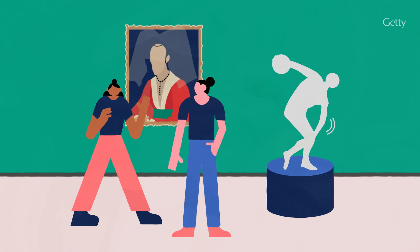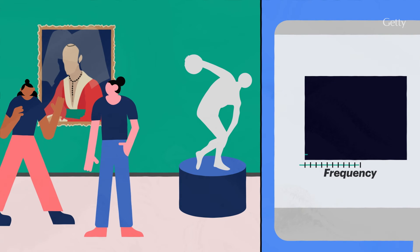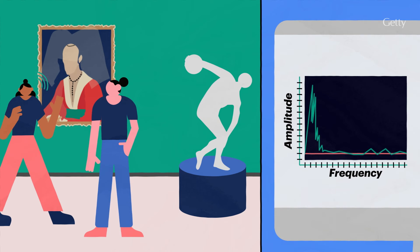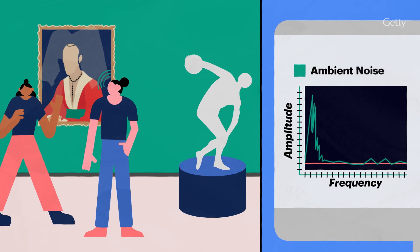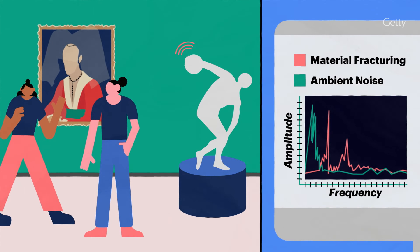So how can we tell the difference between cracking in an object versus visitors chatting in the gallery? To filter out noise, we need to analyze the characteristics of recorded data, such as frequency and amplitude. Low frequency signals, below 50 kHz, typically represent ambient noise, while high frequency signals indicate material fracturing.